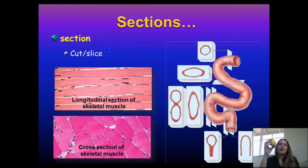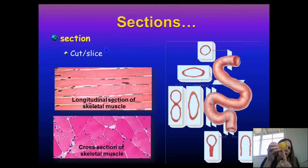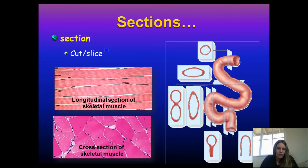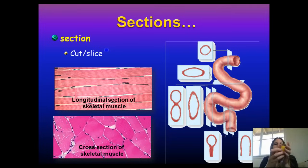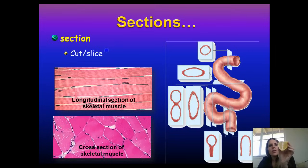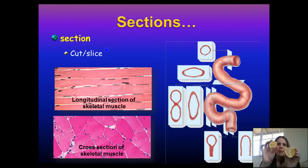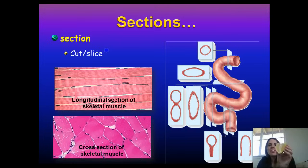Now, what if I took the lemon and cut it lengthwise? The section created from that looks very different — that is called a longitudinal section. This becomes very important when you're working with microscopes, because you need to know what kind of section you're working with when you identify your tissues.